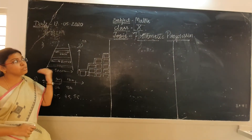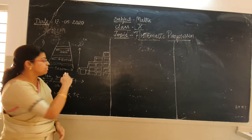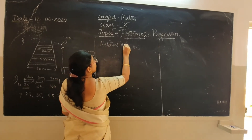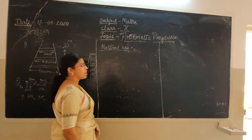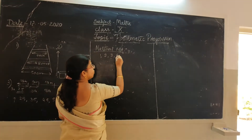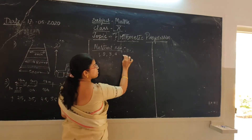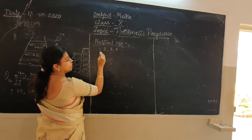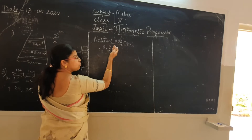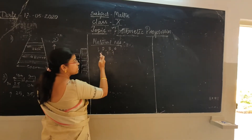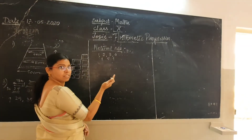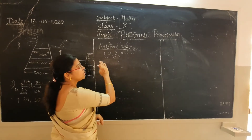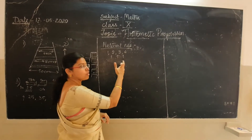Now we will understand why we need to study arithmetic progression by looking at numeric examples. Consider natural numbers: 1, 2, 3, 4, and so on endlessly — represented with three dots. What is the difference from one number to the next? It is 1. From 2 to 3 it is 1, from 3 to 4 it is again 1. So natural numbers are incrementing sequentially and fall into a particular pattern.